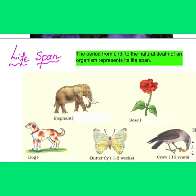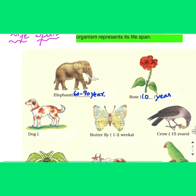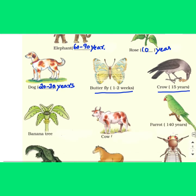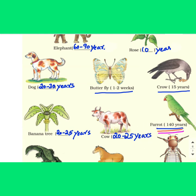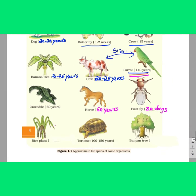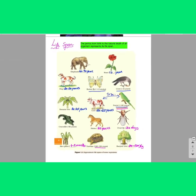Lifespan is the period from birth to the natural death of an organism. Lifespan varies: elephant 60–90 years, rose 10 years, dog 20–30 years, butterfly 1–2 weeks, crow 15 years, banana tree 20–25 years, cow 20–25 years, parrot 140 years, crocodile 60 years, horse 60 years, fruit fly 30 days, rice plant 4–5 months, tortoise 100–150 years, banyan tree 200–500 years. Note that size is not related to lifespan — a small parrot lives far longer than a large cow.